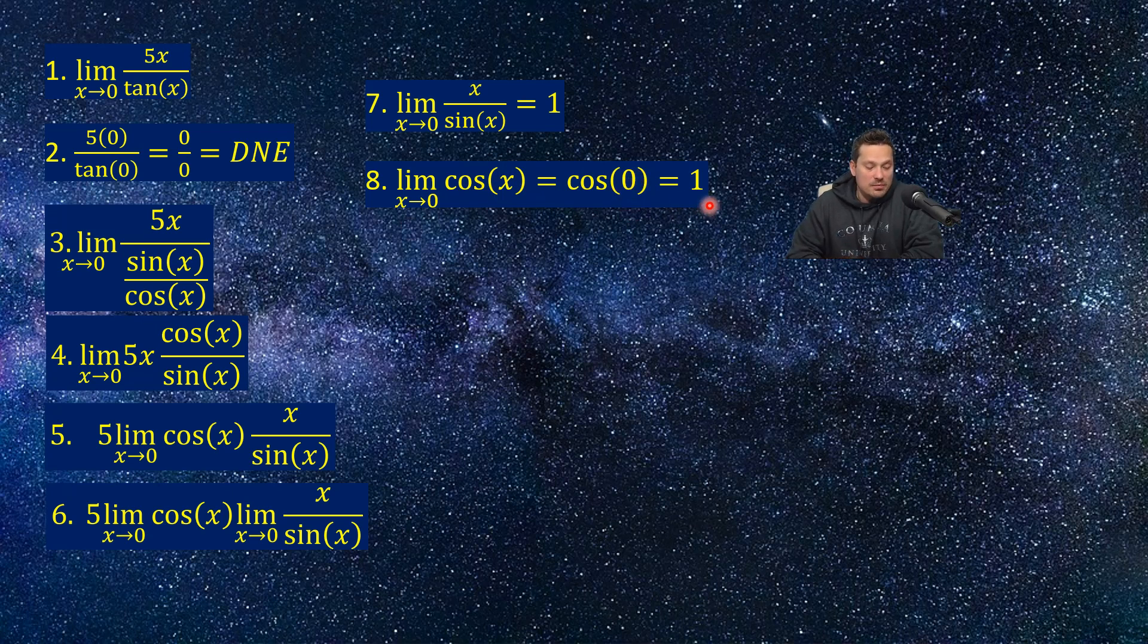So now I know back at step 6, limit as x approaches 0 of cosine x. I know that's equal to 1. I know that the limit as x approaches 0 of x over sine x is equal to 1, which means that now I just multiply everything together.